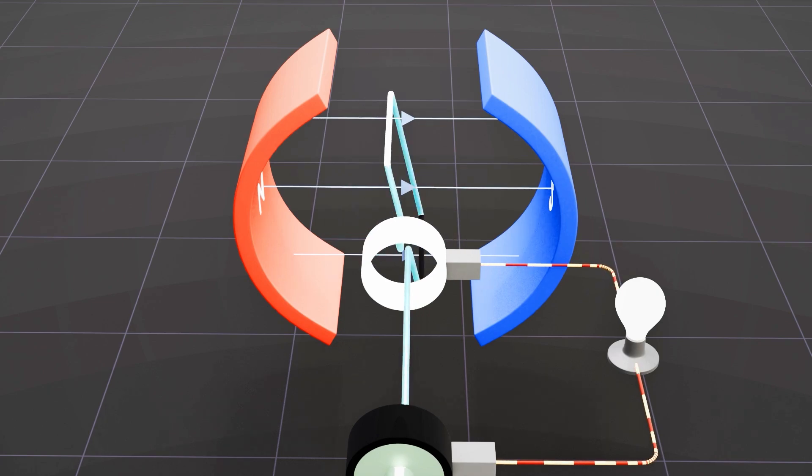Once the coil returns to the vertical position, the current stops flowing, and the cycle repeats. Because the current changes direction every half cycle, this type of generator is called an alternating current generator.